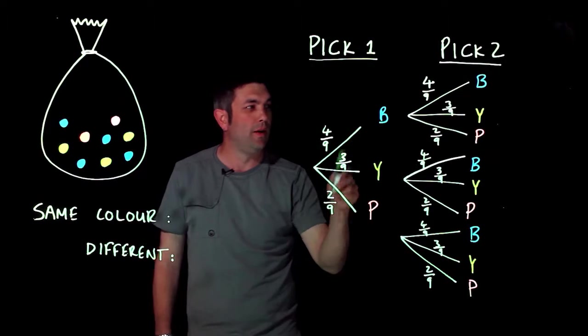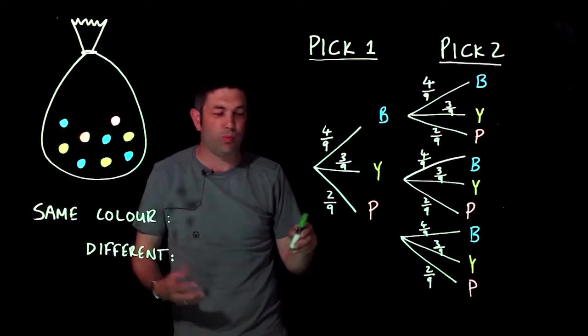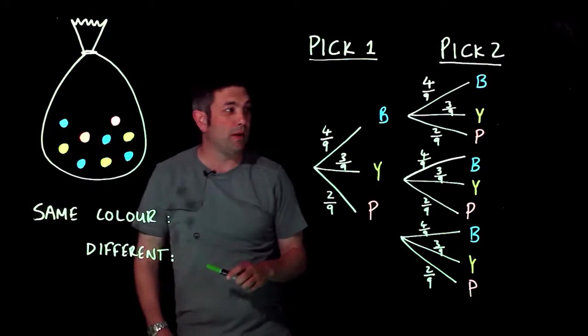Now I'm not going to simplify that because it will help me at the end when I'm adding up all my different options, and two ninths being the pinks.